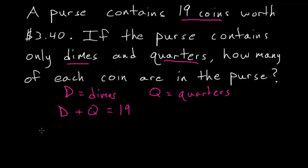We know that the coins total to $3.40, and it's some combination of dimes and quarters.